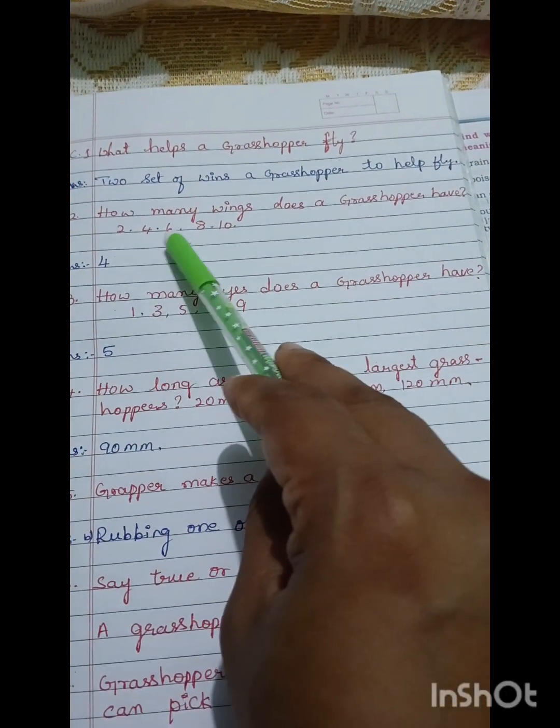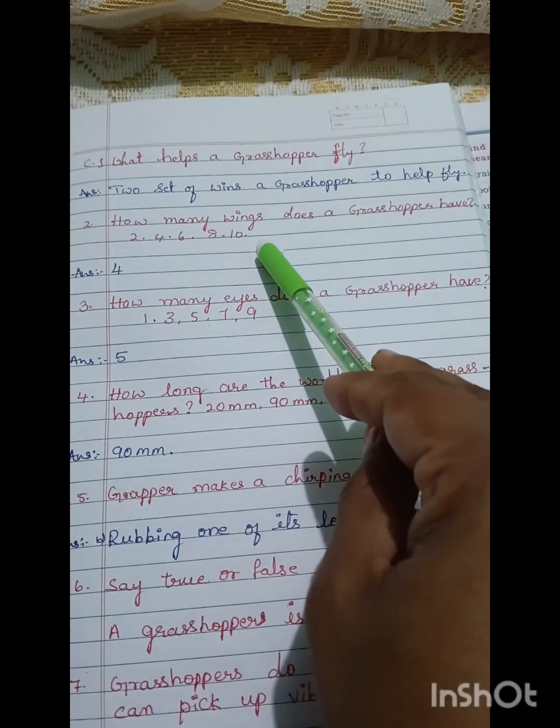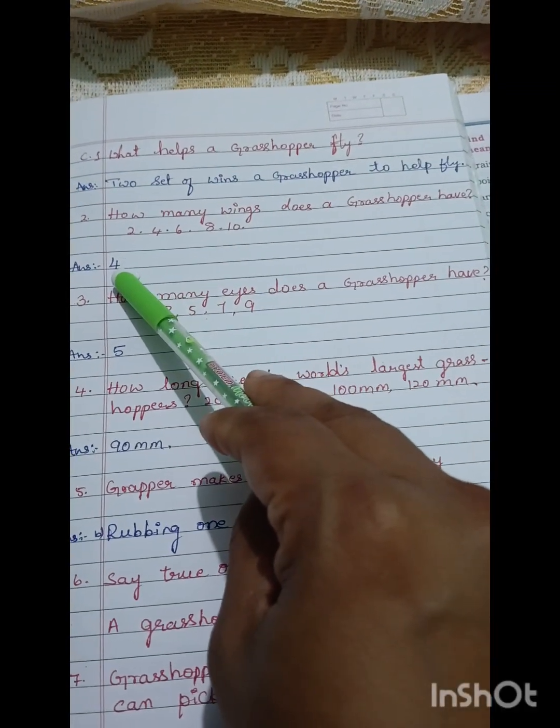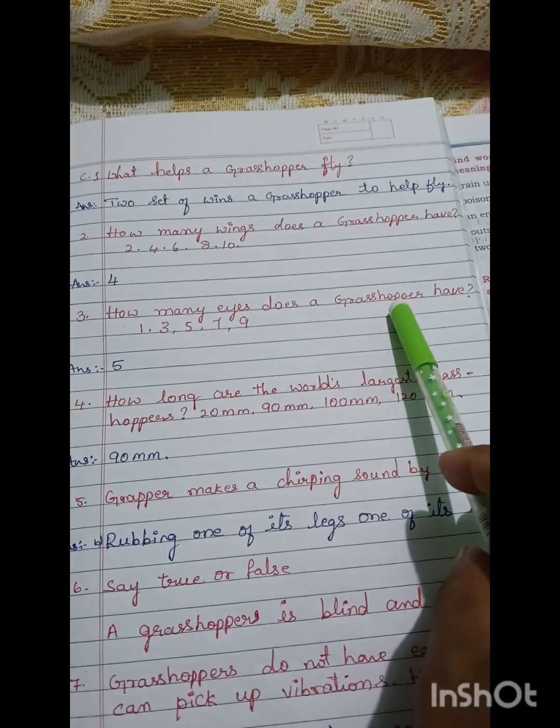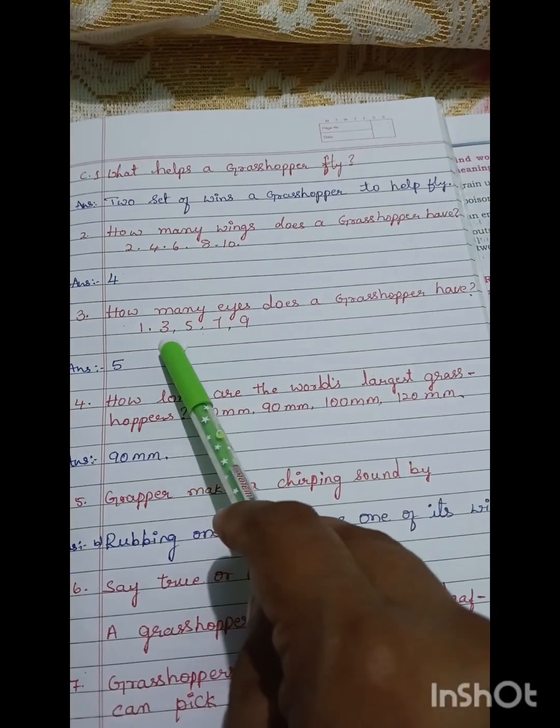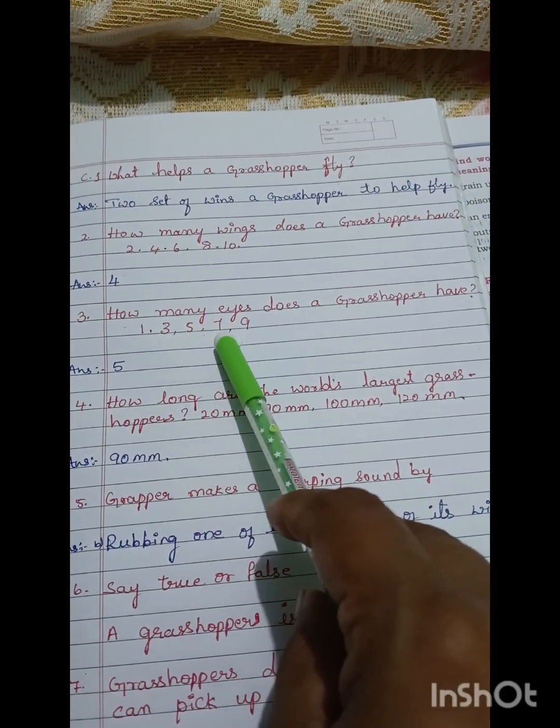Two, four, six, eight, ten - it is four. How many eyes does a grasshopper have? One, three, five, seven, nine - it is five.